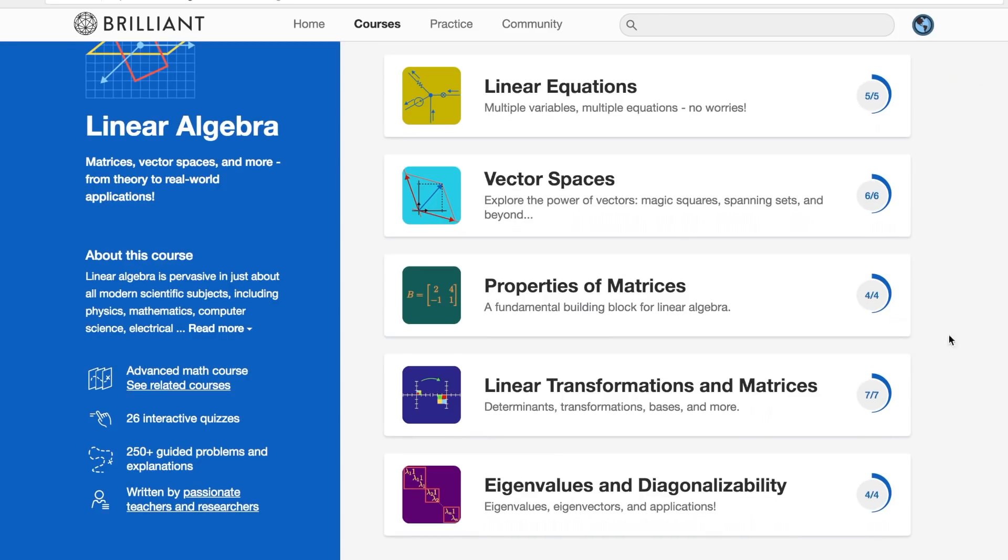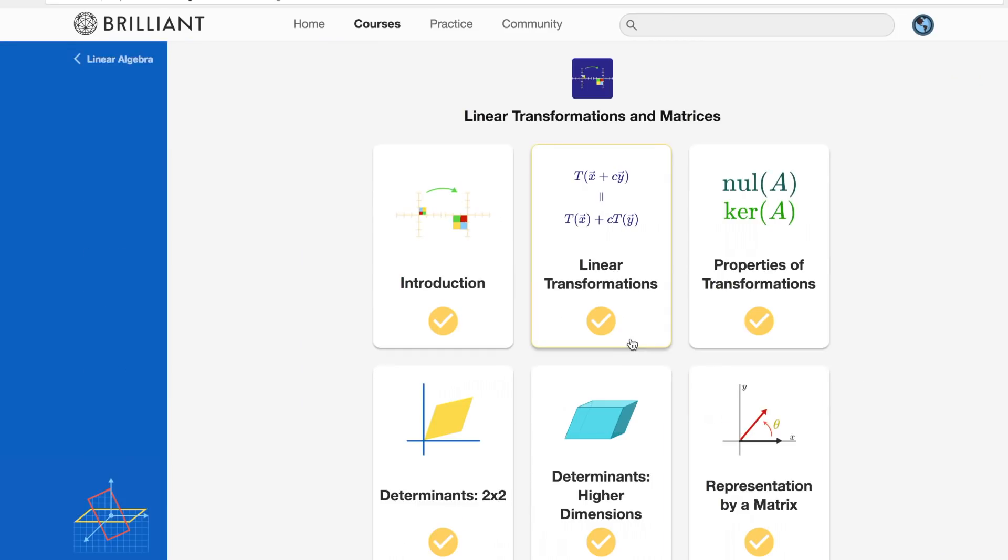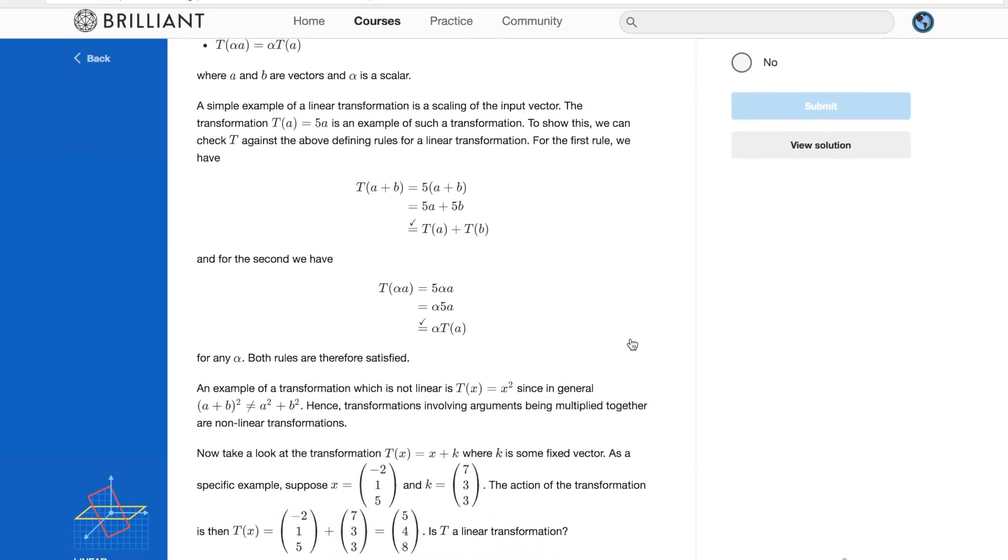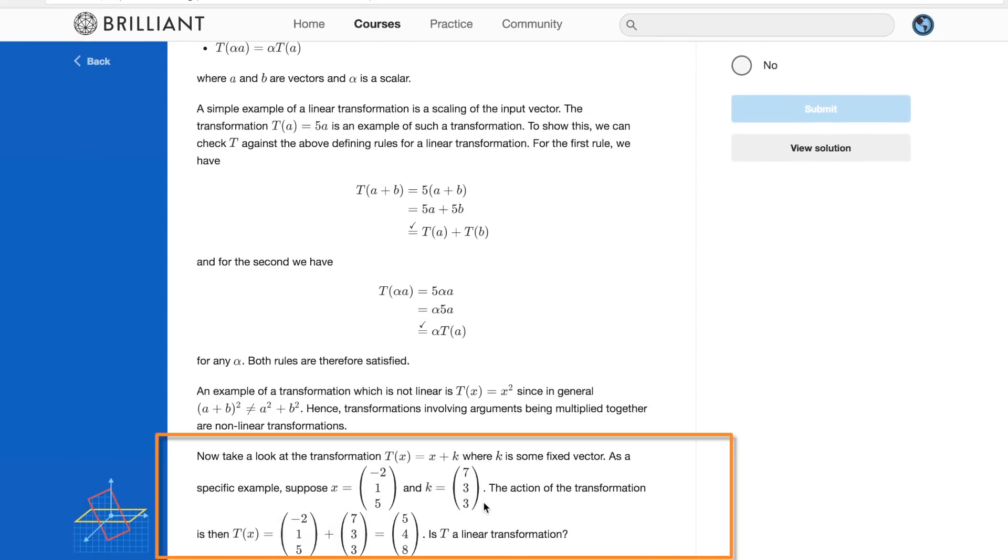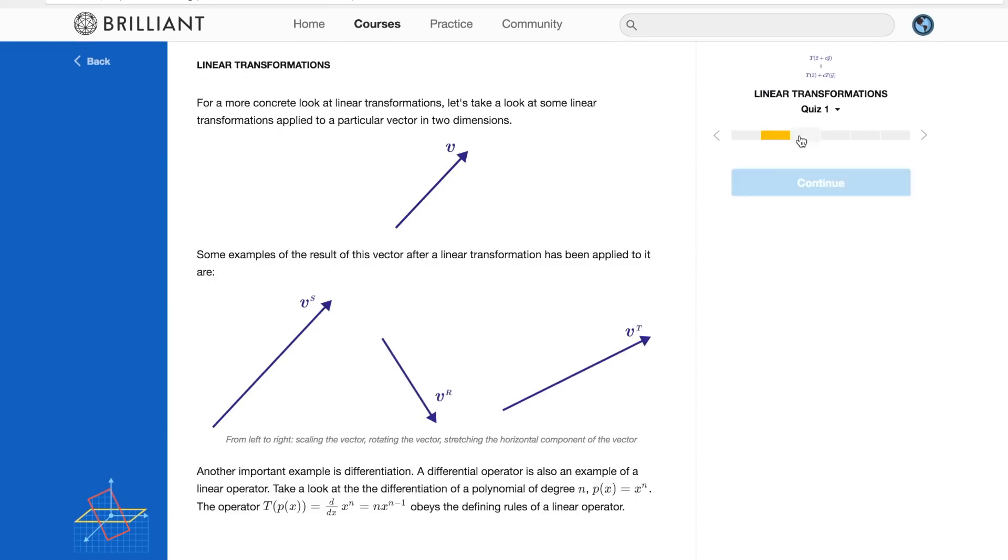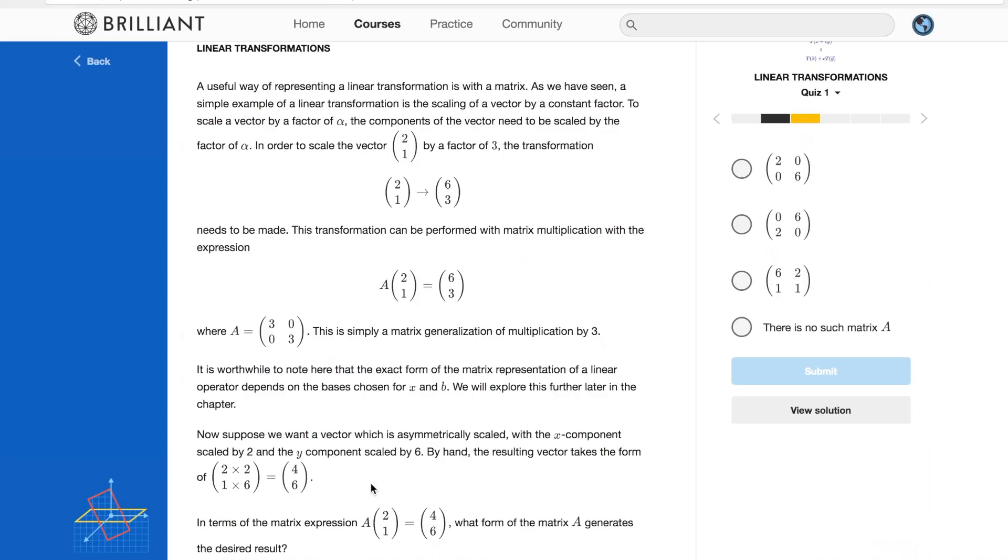Second and this is a multiple choice one. Consider a transformation that takes a 3D vector and adds some fixed vector k to it. Say k is the vector 7 3 3. Is this a linear transformation or not? Third imagine you have a matrix A that multiplies the first basis vector by 2 and the second basis vector by 6. How do you write A in this basis?